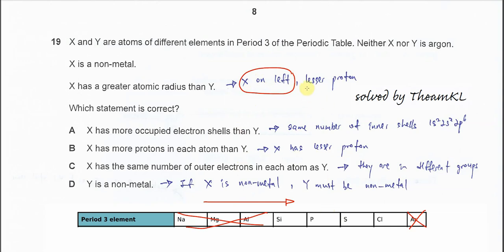From here, answer the question. Option A: X has more occupied electron shells than Y. Occupied electron shells most likely refers to the inner shell. X and Y are in the same period, so they will have the same inner shell, which is 1s2 2s2 2p6. So A is wrong.